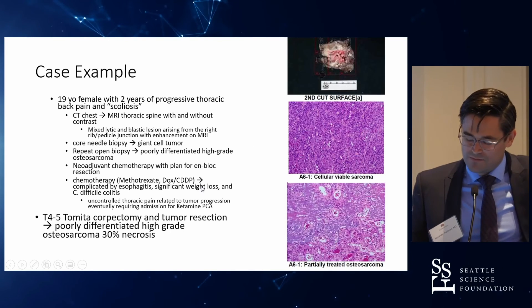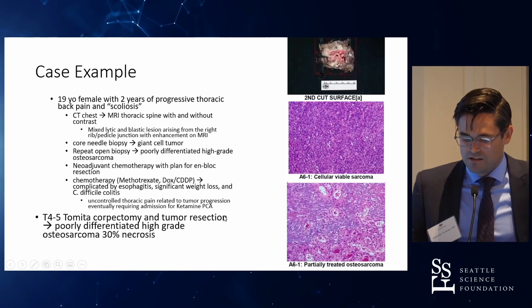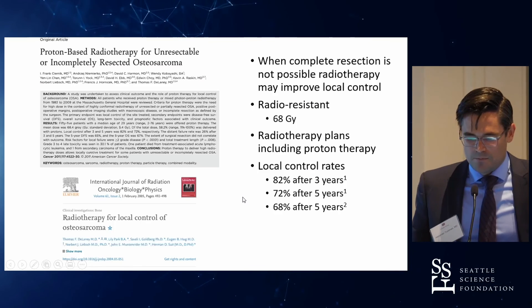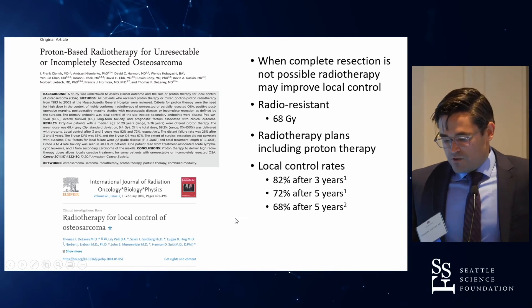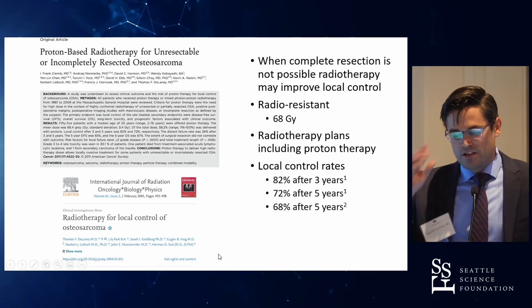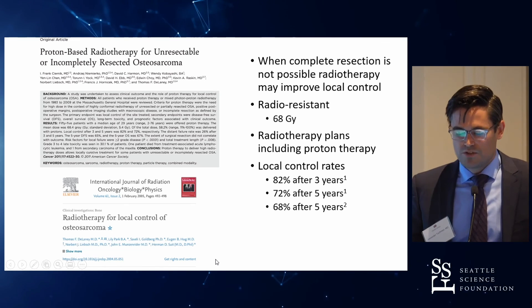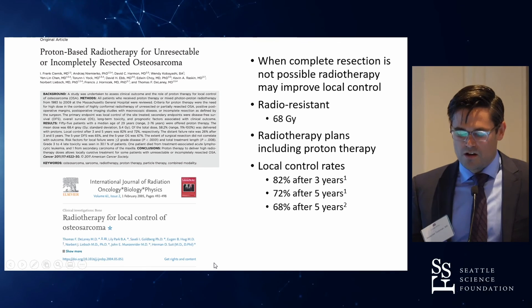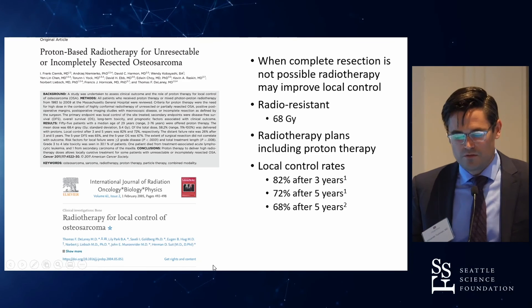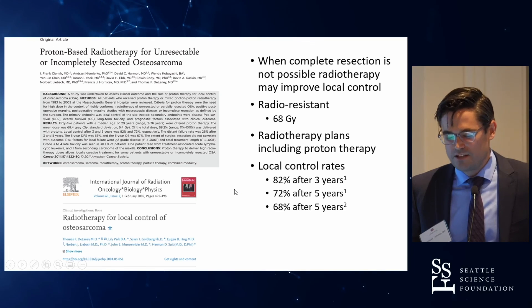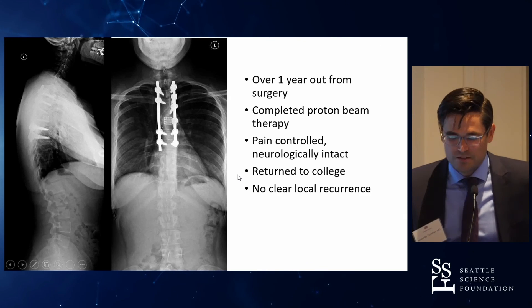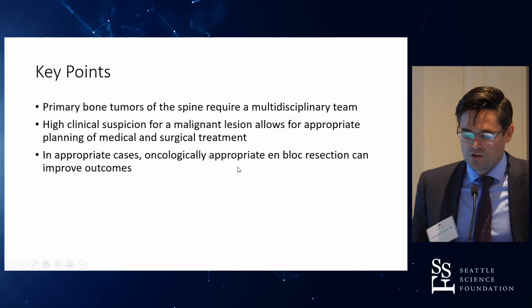Her tumor clearly did not respond to chemotherapy — she had only 30% necrosis, whereas typically you want about 90% preoperatively from neoadjuvant chemotherapy. In terms of salvage: though osteosarcoma is a radio-resistant tumor, with proton beam and radiosurgery there is now some data showing relatively good local control rates for this devastating tumor type. She is currently about a year out, doing well and back in college, with pain well controlled and no clear local recurrence — though we are watching her extremely closely.